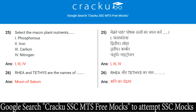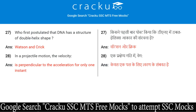Rhea and Tethys are the names of moons of Saturn. Who first postulated that DNA has a double helix structure? The answer is Watson and Crick.